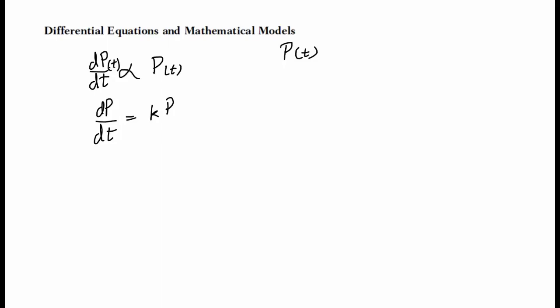Its solution is C e to the kt. You can see it's a separable equation: dP over P equals k dt. This gives you the exponential growth model essentially for populations like bacterial, viral, or even human populations that follow exponential models.